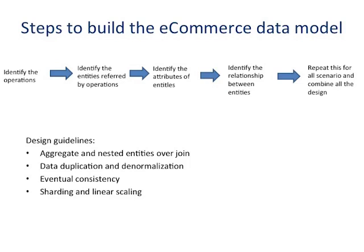To recap the design guidelines: you have to think about application and natural entities over joins. When your data is denormalized, you have to be okay with some data duplication — normalization avoids that, but denormalization means some duplication in your system. You have to understand eventual consistency and the CAP theorem — you can't get everything. You'll get any two out of consistency, availability, and partition tolerance. Most NoSQL technologies let consistency go and focus on availability and partition tolerance. Whatever technology you choose, understand the trade-off you're making. And sharding gives you linear scaling, which is the key benefit.